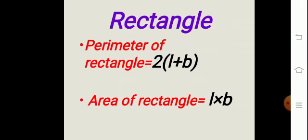Rectangle. A rectangle has four sides and opposite sides are equal. The formula for the perimeter of a rectangle is 2 multiplied by (L + B), where L is the length and B is the breadth. The area of a rectangle is equal to L into B, that is length into breadth. Area is expressed in square units and perimeter in single units.